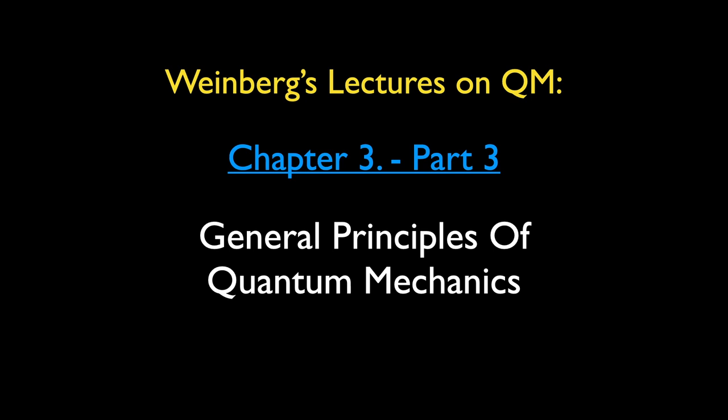Hello friends! This is the third lecture of a series where we go through the book on quantum mechanics by Steven Weinberg. This is part 3 of chapter 3 on the general principles of quantum mechanics. As we have explained, we will first go through chapter 3, then chapter 2, which is applying the principles in this chapter to a particle moving in a central potential, followed by chapter 1, which talks about the historical development of quantum mechanics. We feel that this is a more logical reading sequence.